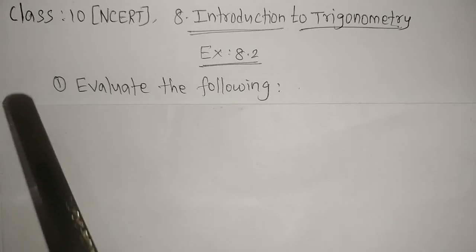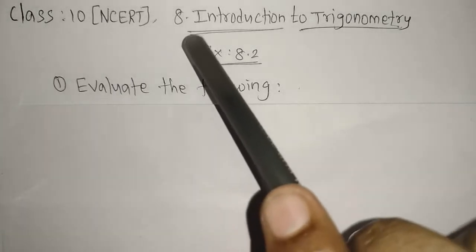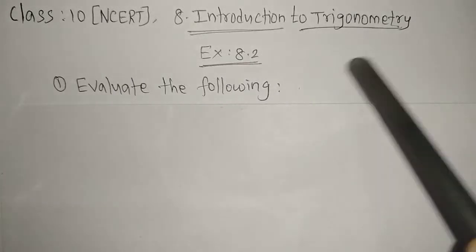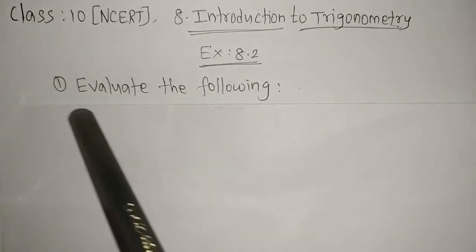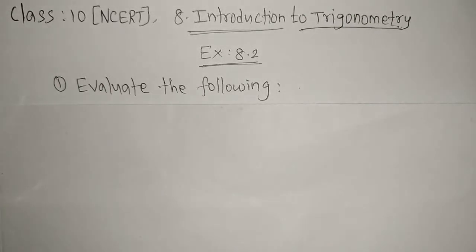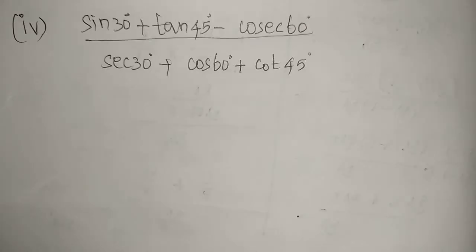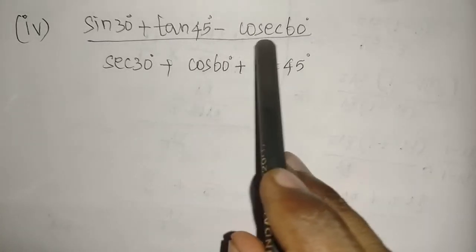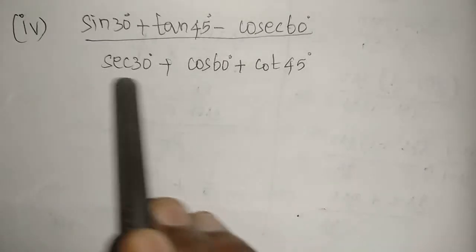Welcome to the channel. Today we are going to see Class 10 NCERT Chapter 8, Introduction to Trigonometry, Exercise 8.2. First, evaluate the following: sin 30° + tan 45° - cosec 60° divided by sec 30° + cos 60° + cot 45°.